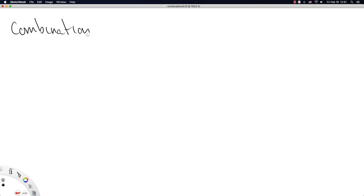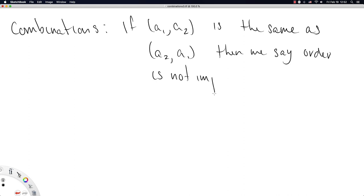Combinations. If A1, A2 is the same as A2, A1, then we say order is not important. So there, it doesn't matter if we go A1, A2 or A2, A1, we essentially have the same sequence. So let's just try a quick example.